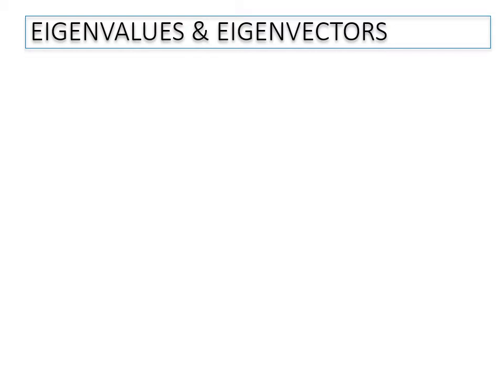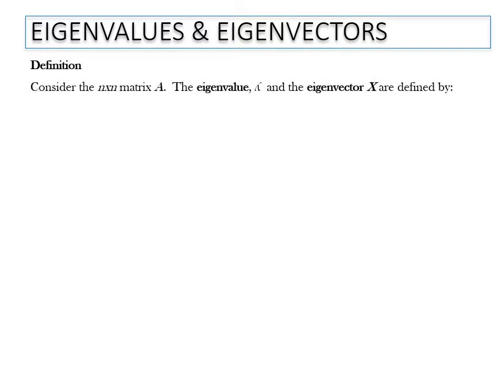For today's lecture, we will learn how to find eigenvalues and eigenvectors. First, we go to the definition. Consider an N by N matrix, meaning a square matrix.